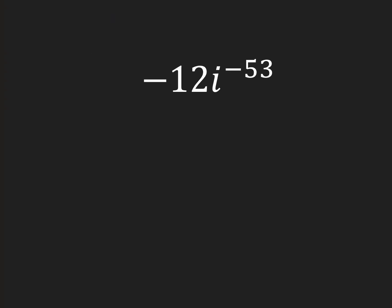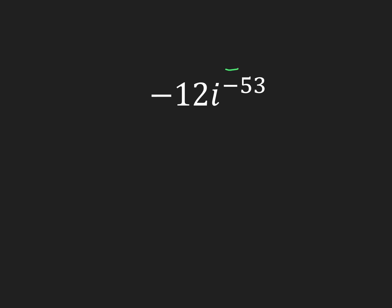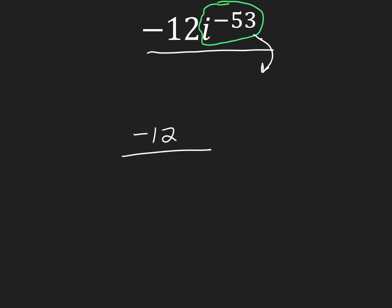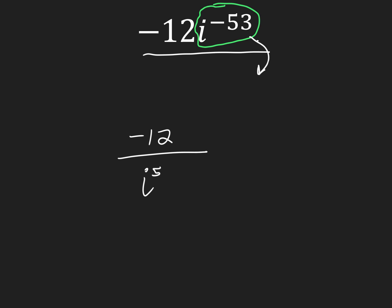Moving along, we have i to the negative 53rd power to simplify. Notice we are concerned about having a negative exponent. If you have a negative exponent, how do we make it positive? You move it — you don't move the entire number down, you move just where the negative exponent is. So this moves down, giving us negative 12 over i to the 53rd power.